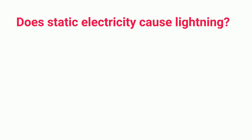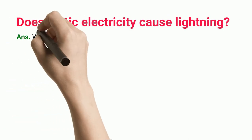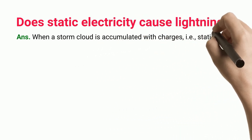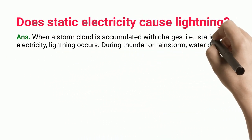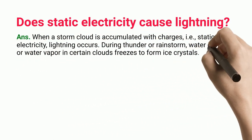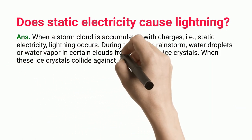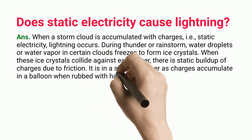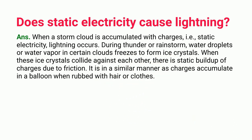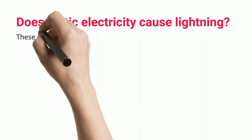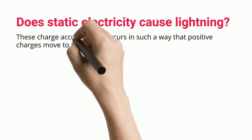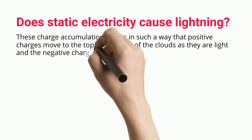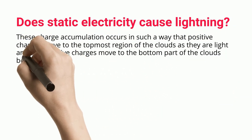Does static electricity cause lightning? When a storm cloud is accumulated with charges — i.e., static electricity — lightning occurs. During a thunderstorm or rainstorm, water droplets or water vapor in certain clouds freezes to form ice crystals. When these ice crystals collide against each other, there is static buildup of charges due to friction, similar to how charges accumulate in a balloon when rubbed with hair or clothes. Positive charges move to the topmost region of the clouds as they are light, and the negative charges move to the bottom part, being heavy.